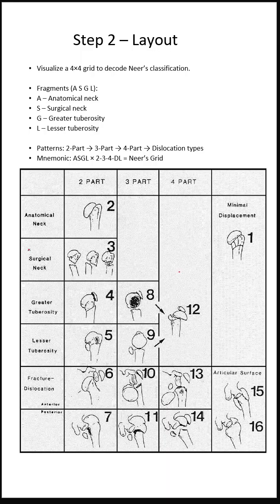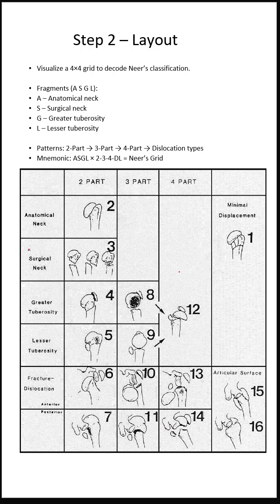Step 3: Link. Connect each to a real picture in your mind. Surgical neck: the hanging head fracture. Greater tuberosity: rotator cuff avulsion.